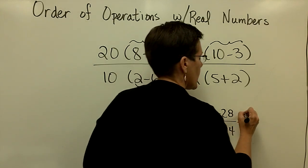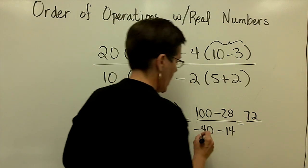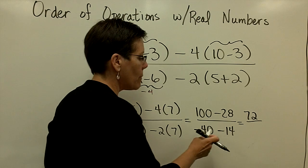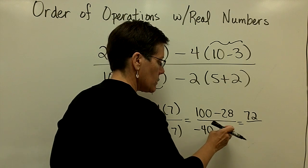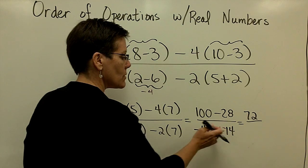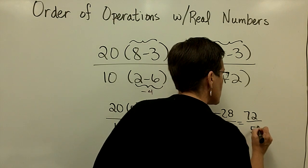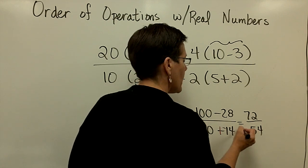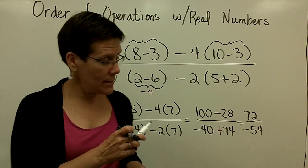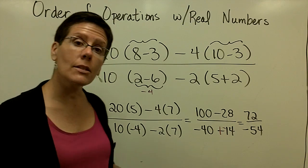Upstairs, 100 minus 28 is 72. And a negative 40 minus 14, or plus a negative 14. Their signs are the same, so I add their absolute values. I give my answer that common sign. And I see that that needs to be reduced. I see that they're even.